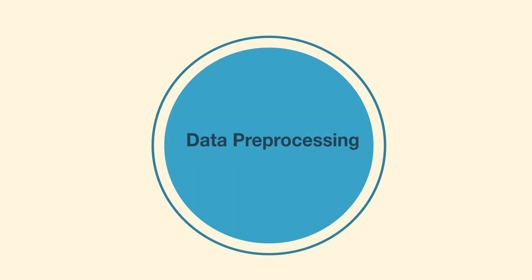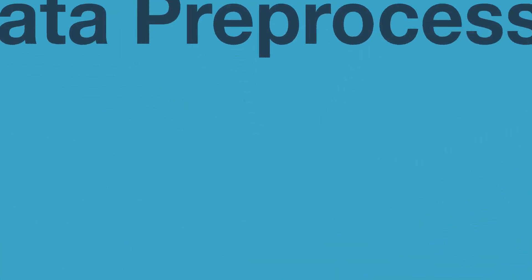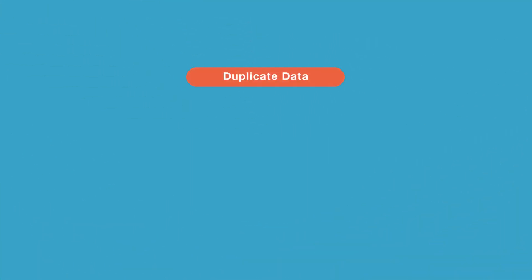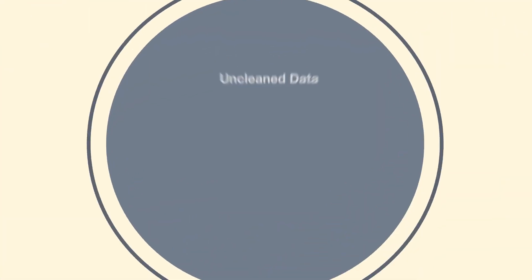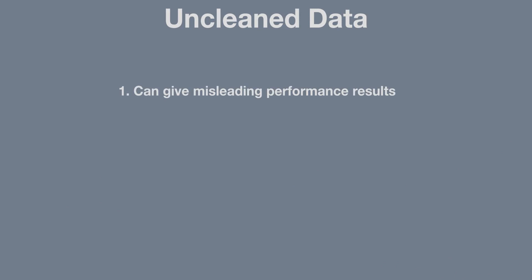In this section we will cover some of the useful data pre-processing methods. When you are working with raw data, instances of duplicate data, missing data, inconsistent data, or data mix-up can occur. If the data is not clean, then the trading strategy can give misleading performance results during the back test, or can give incorrect buy/sell signals while trading. In this part we will cover some important methods for cleaning data using Python.